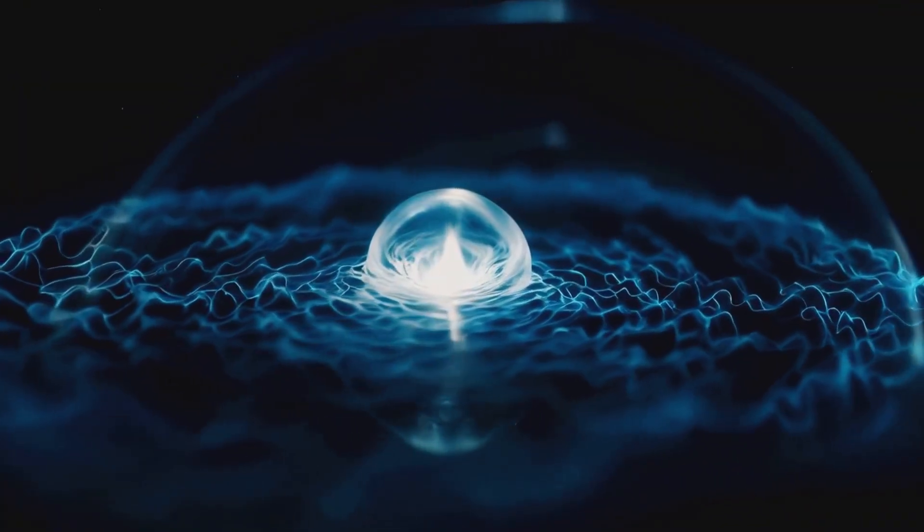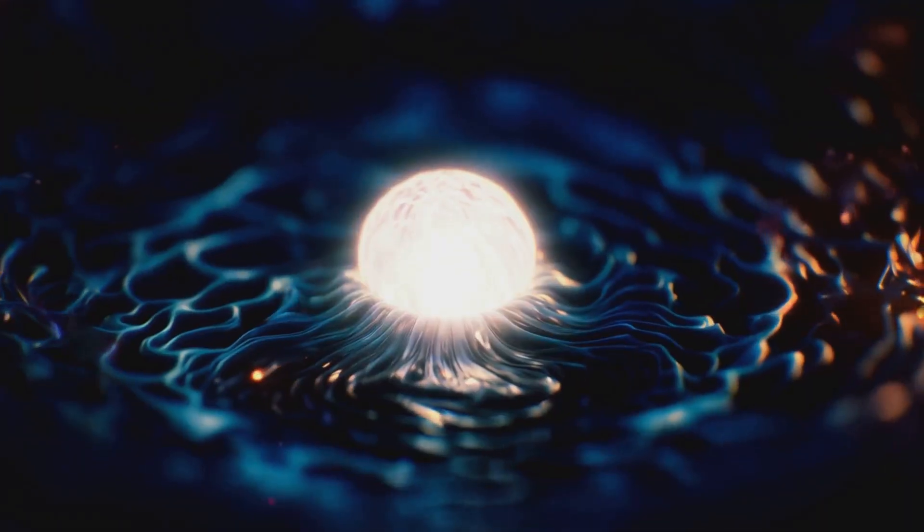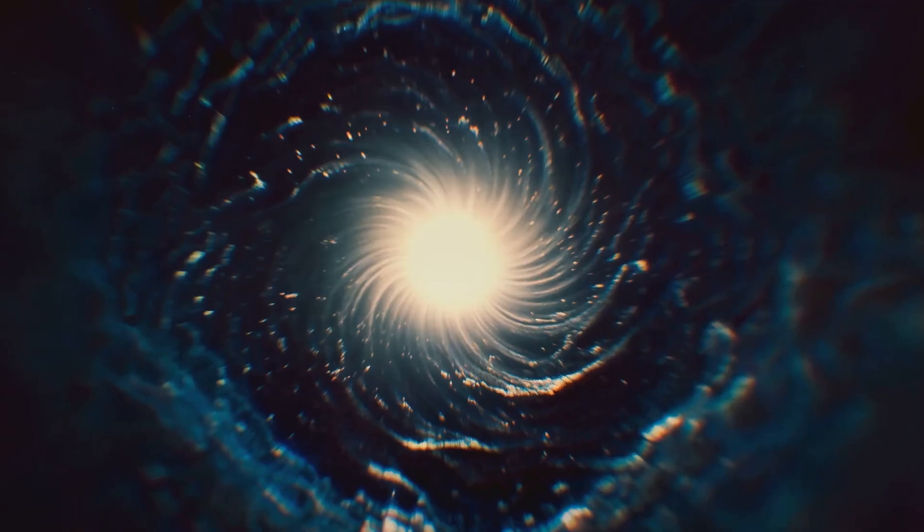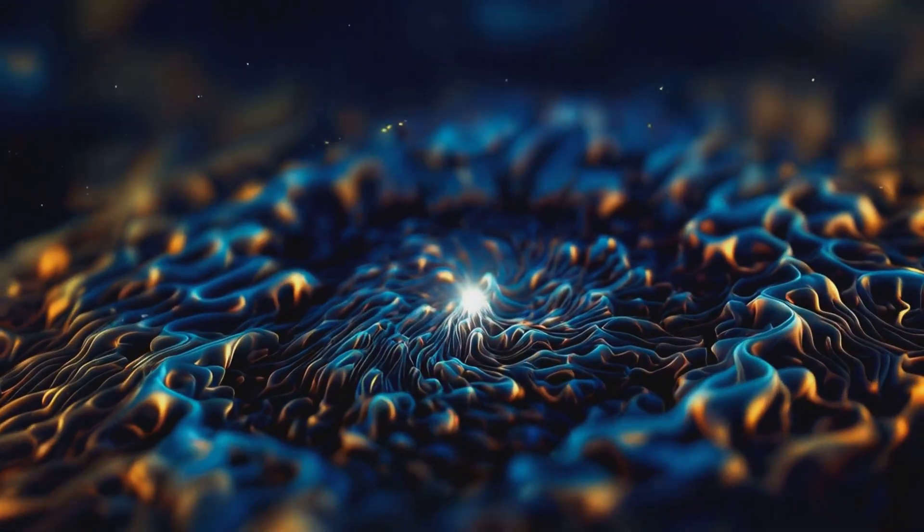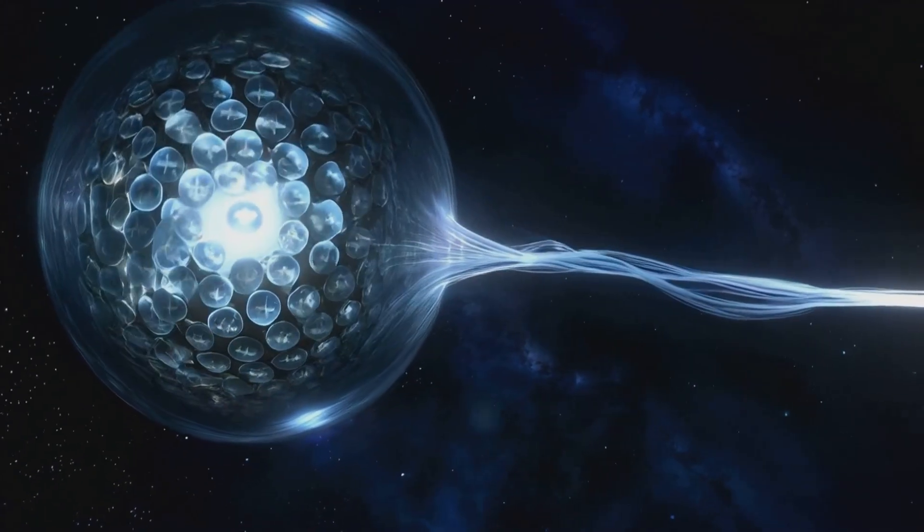Imagine an infinitely small point glowing with unimaginable energy. Surrounding this singularity are rippling waves of energy, quantum fluctuations dancing on a cosmic pond. These fluctuations are not random. They're encoded probabilities and geometries of the qubits that compose our universe.